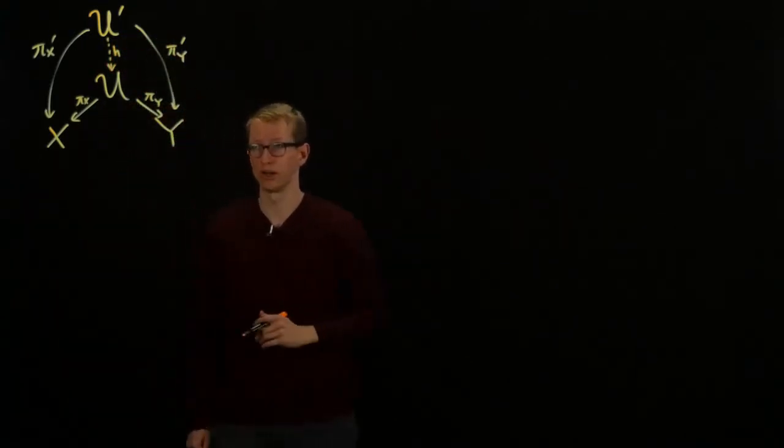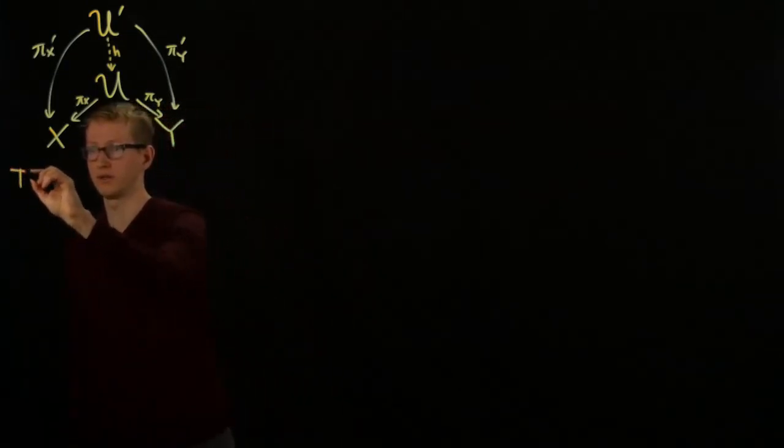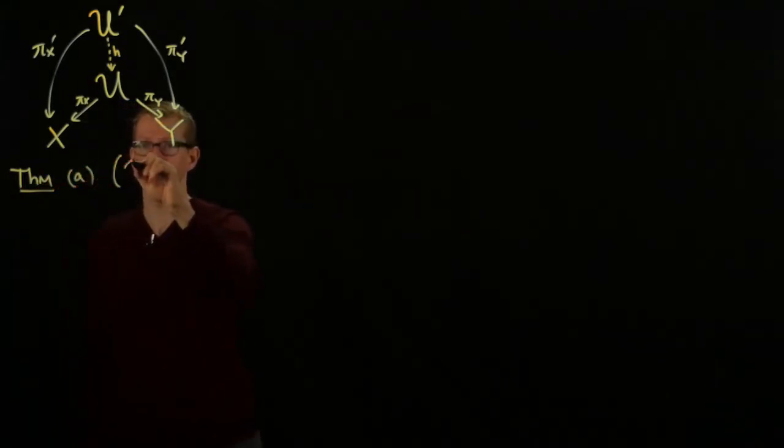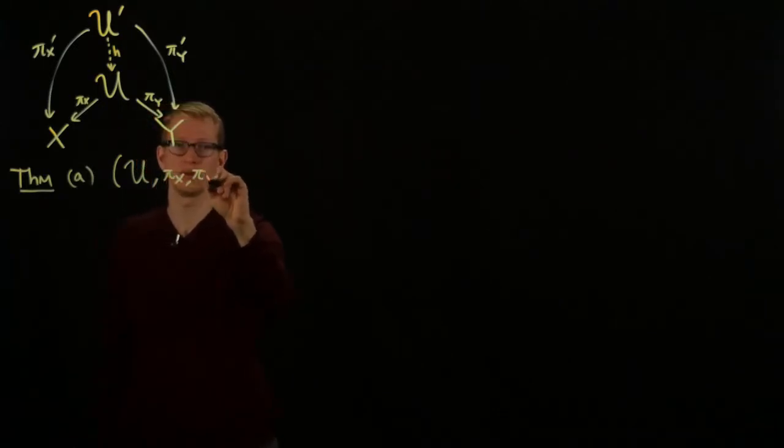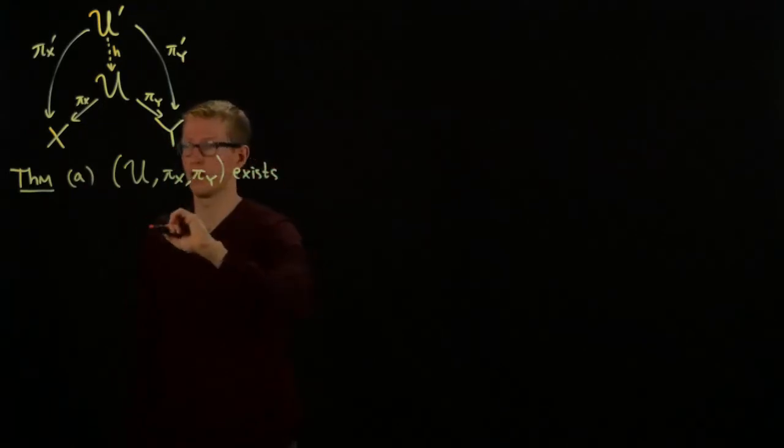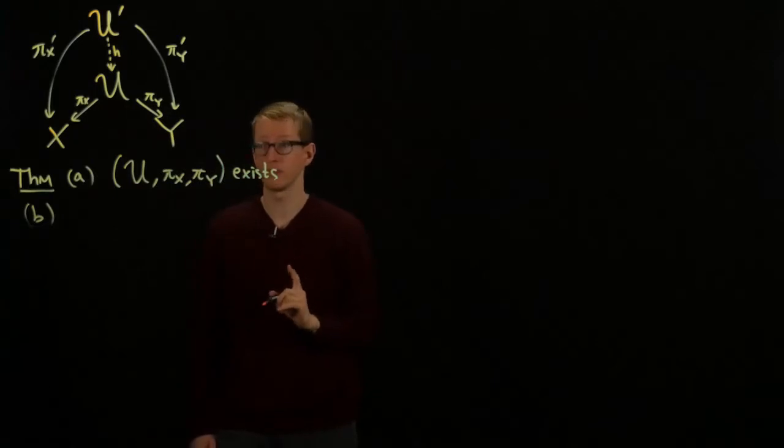So here U is the product, is a product. So now we want to know if such a thing exists, and it turns out that the product, which we'll write as a triple, exists. And secondly, it's unique in the following sense.